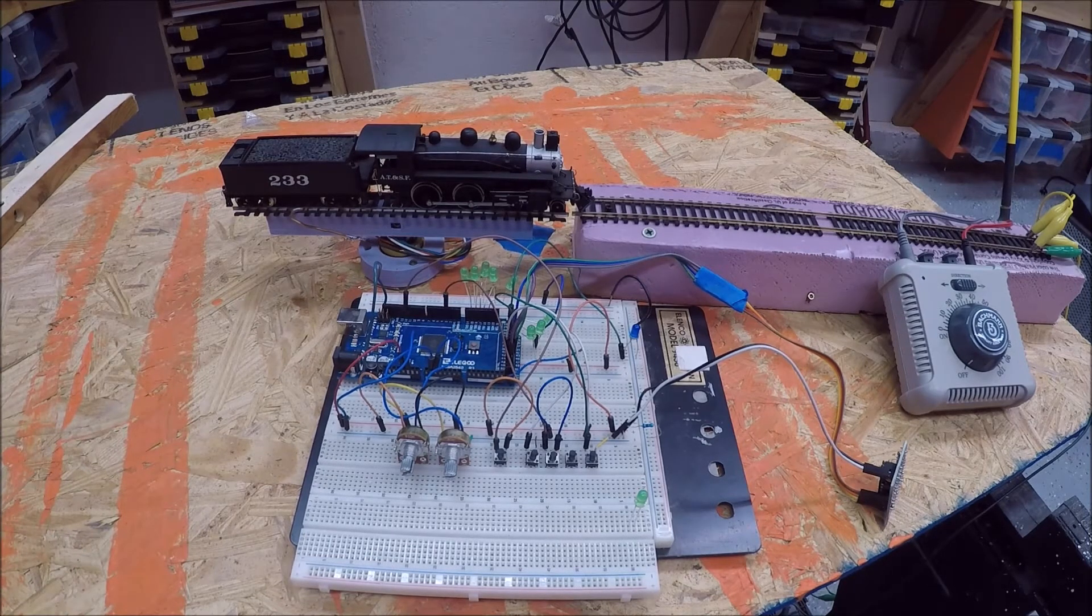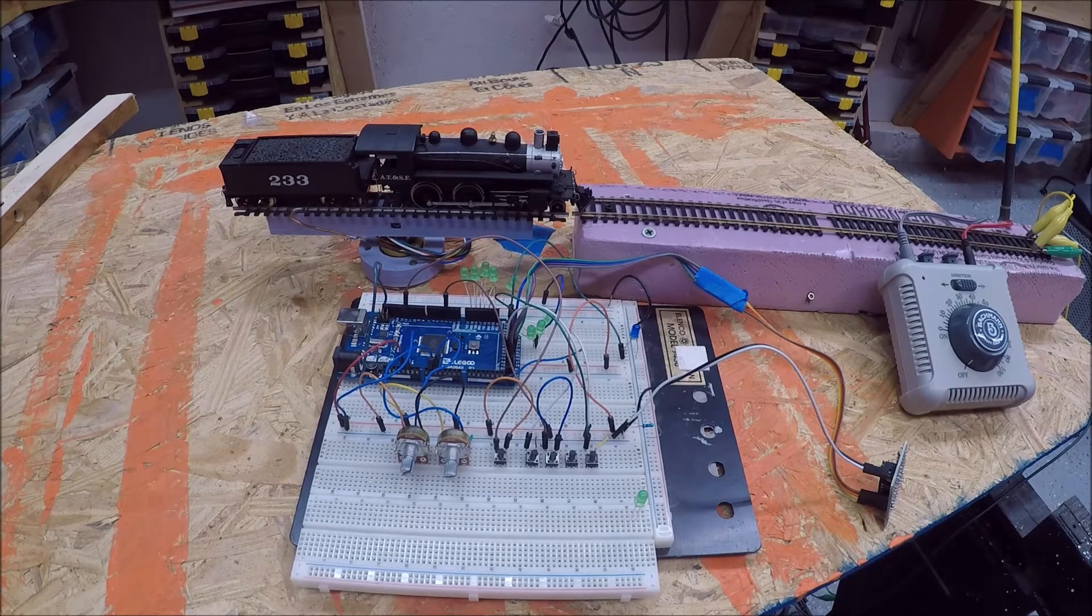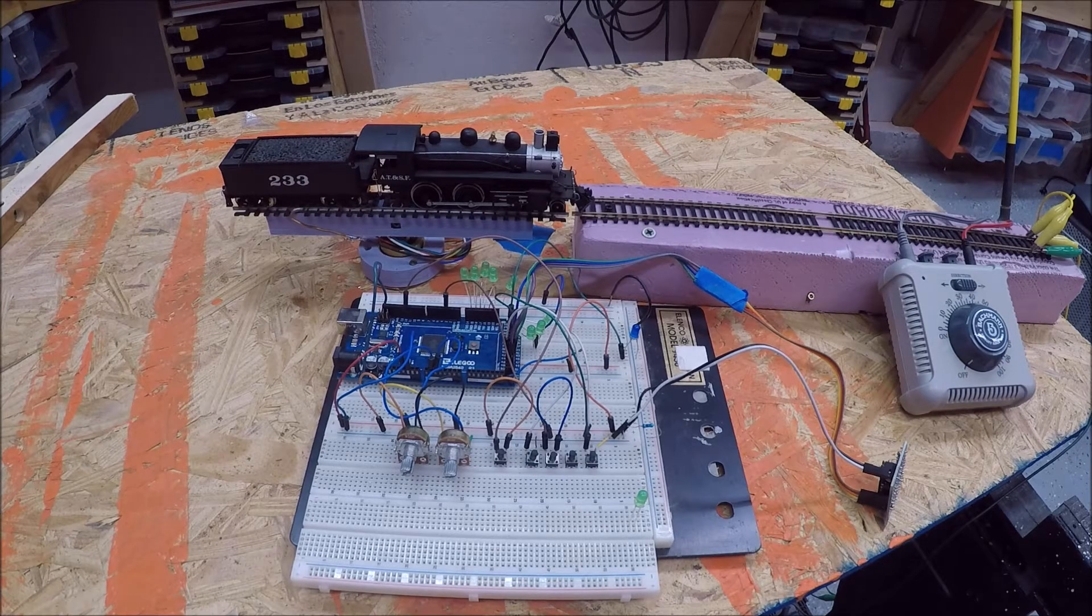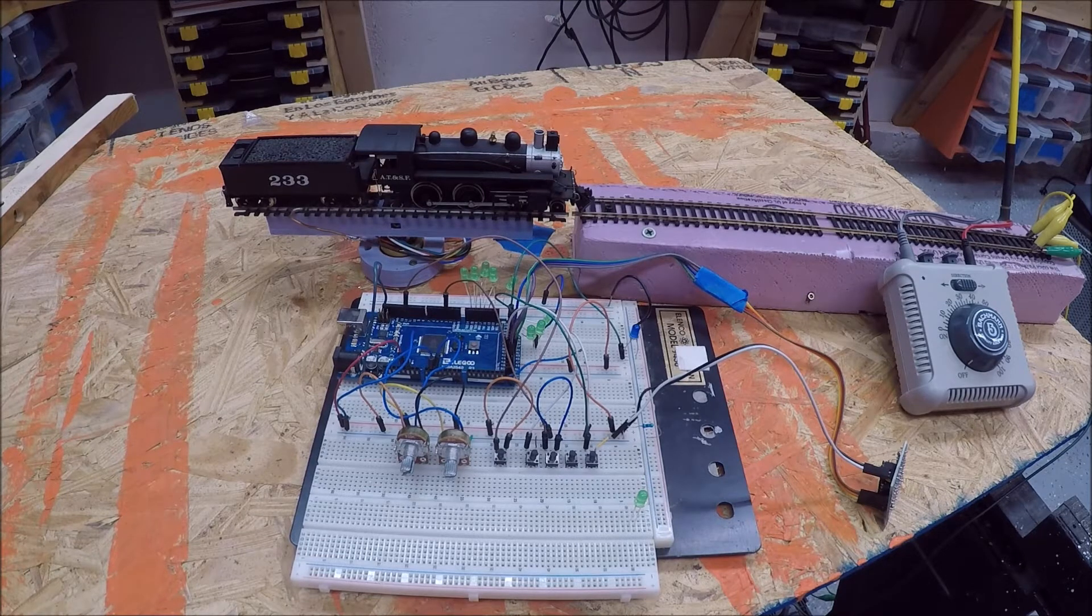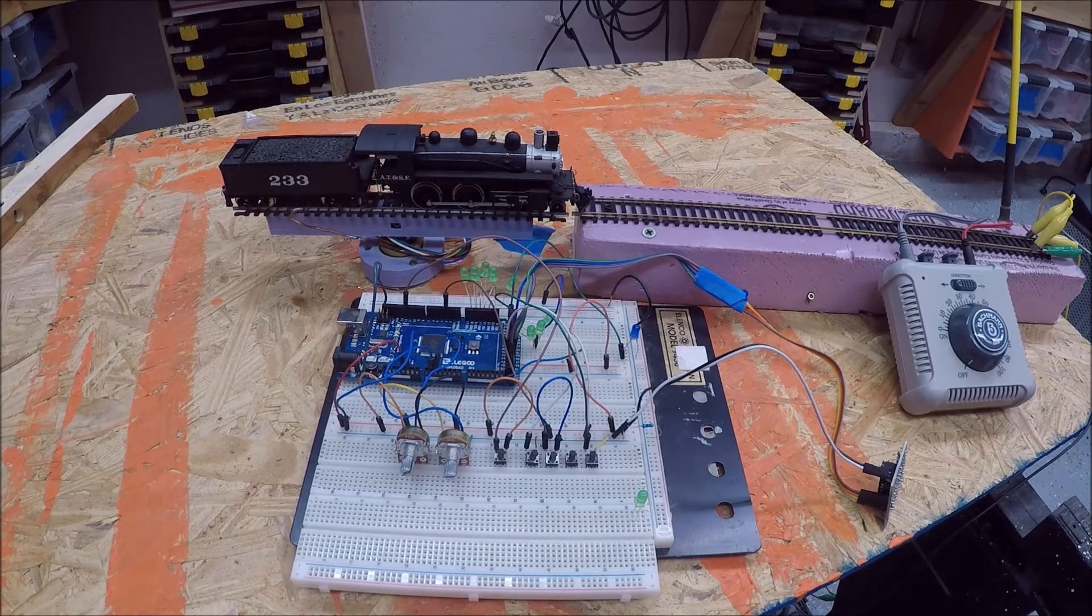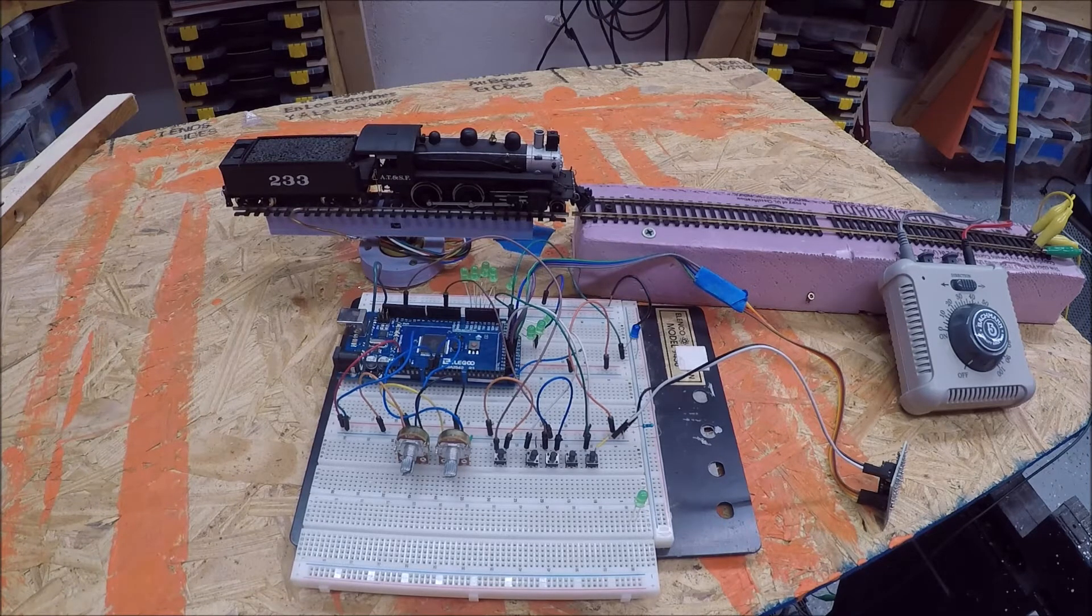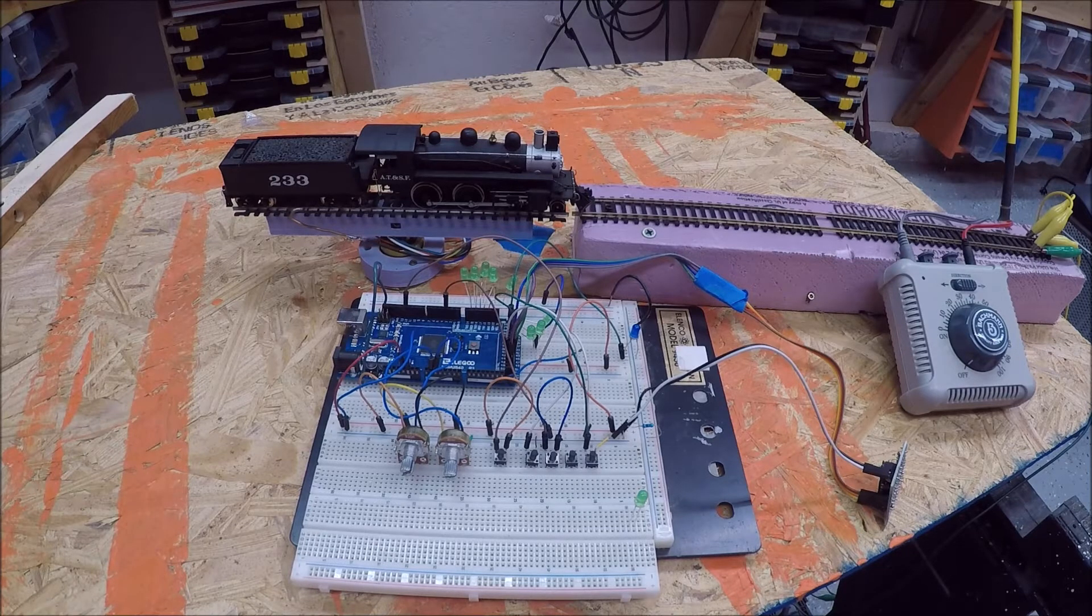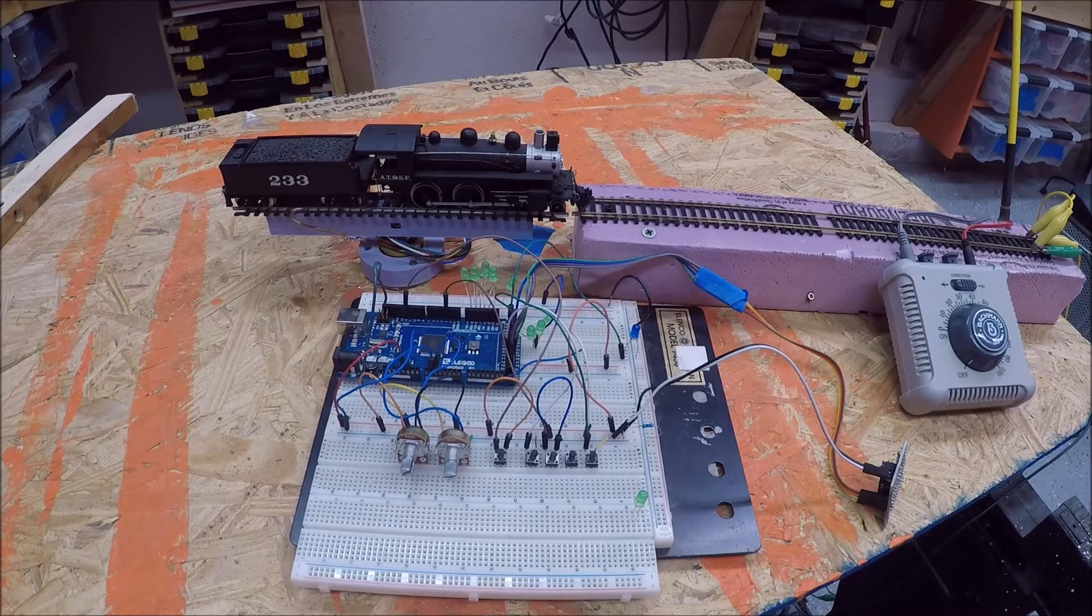I looked it up, and a Walther's 130-foot turntable costs $300 for a motorized version, which just seemed really high. So I thought, maybe I can build something a little cheaper. In this video, I'm going to show you how I used 3D printing, Arduino, and some electronics to build a working prototype of a turntable. Hopefully you can learn something, and I'll probably make a part two and part three. This is just a good proof of concept.